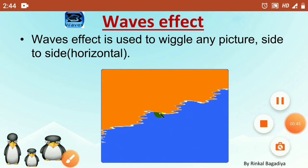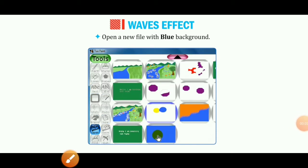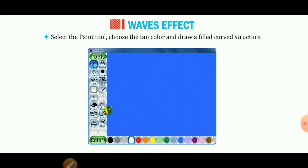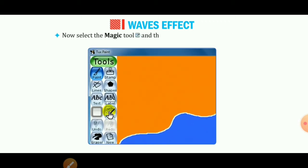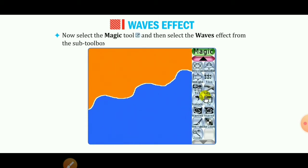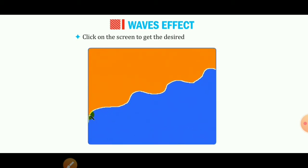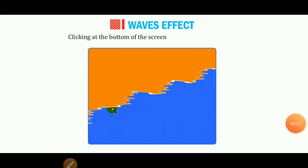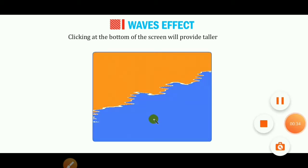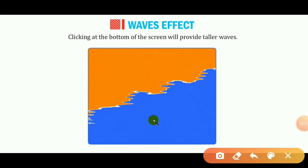Let's see practically how waves effect works. Open a new file with a blue background. Select the paint tool, choose the tan color, and draw a filled curved structure. Then select the magic tool and select the waves effect from the sub-toolbox. Penguin's instructions appear below the drawing area — read those instructions carefully and follow them. Now click on the screen to get the desired waves effect. Clicking at the bottom of the screen will provide taller waves. You can see the waves effect applied to the drawing.